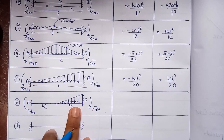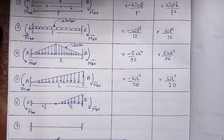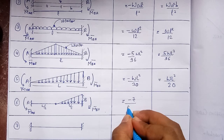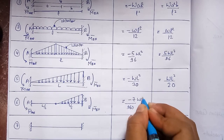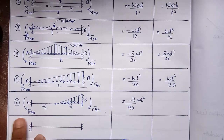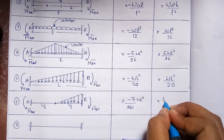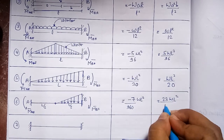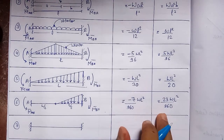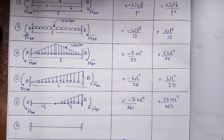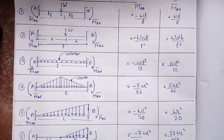If this same increasing UVL is applied only over half the span (L/2) instead of the full span, the fixed end moments change. The value at joint A is M-bar_AB = −7wL²/960 and at joint B is M-bar_BA = +23wL²/960. Remember: 960 is common to both formulas — just recall the numerators: −7 for joint A and +23 for joint B.